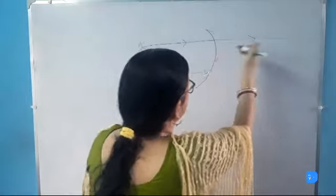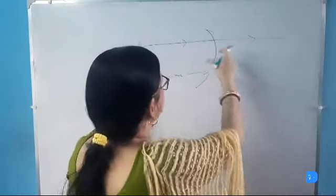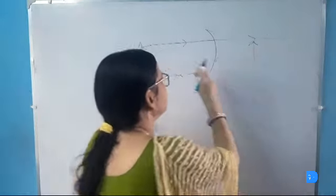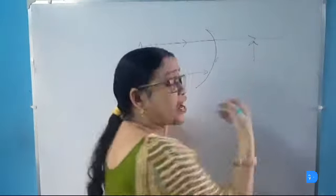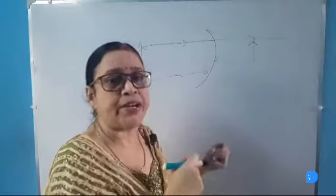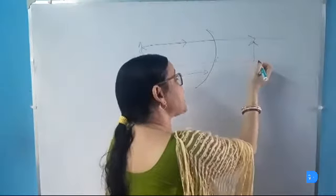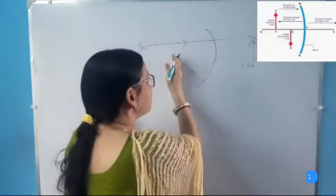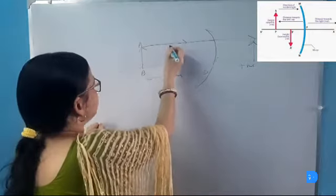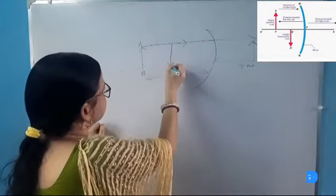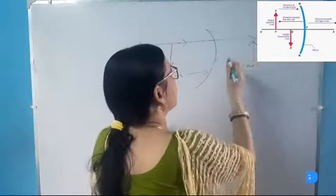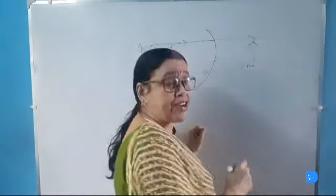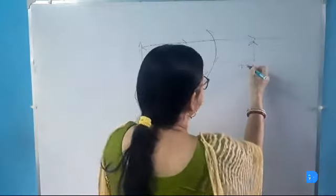When the image will be formed on the right hand side or in the direction of the incident light, then they will be considered as positive. Thus if the images are formed on the right hand side or behind the mirror, then the image distances will be considered as positive. But if the image is formed on the left hand side or in front of the mirror, then the image distance will be considered as negative.